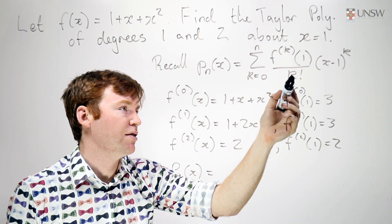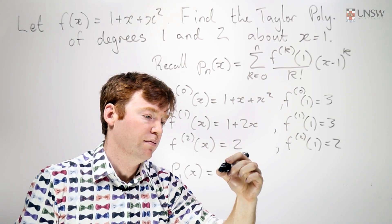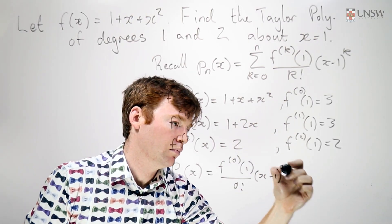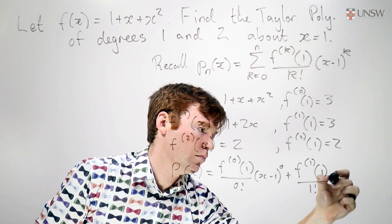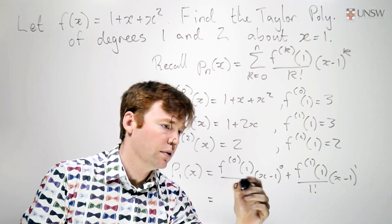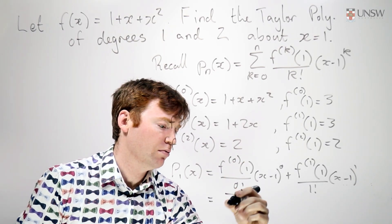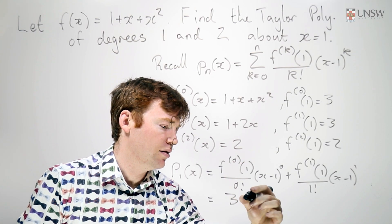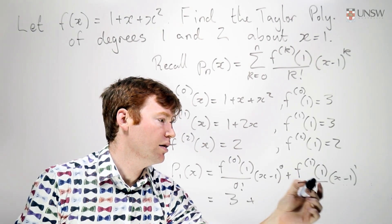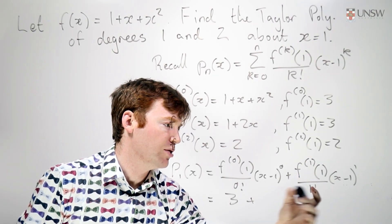So this is when k is equal to 0. And this is 3 divided by 1 times 1, which is 3, and this here is 3 divided by 1 times x minus 1.